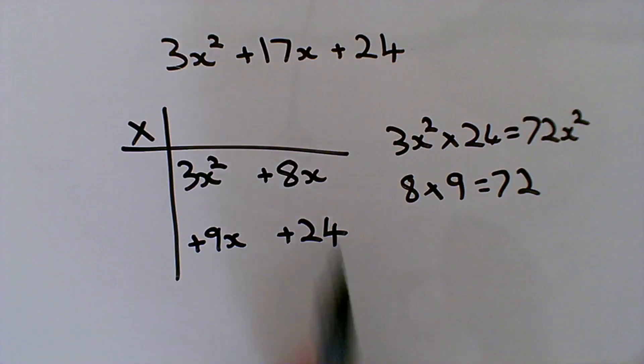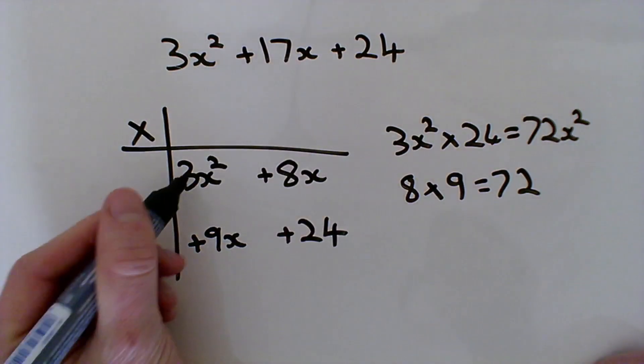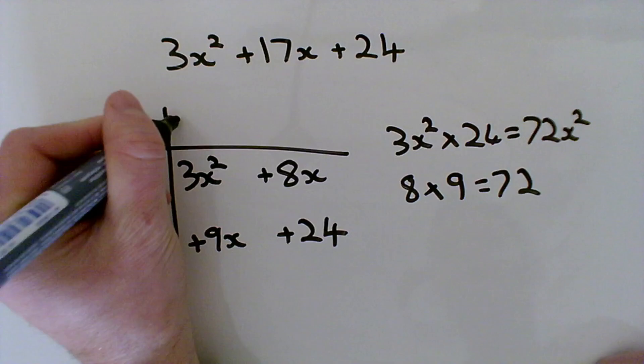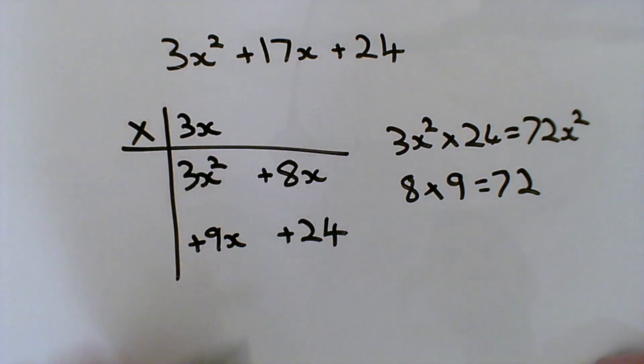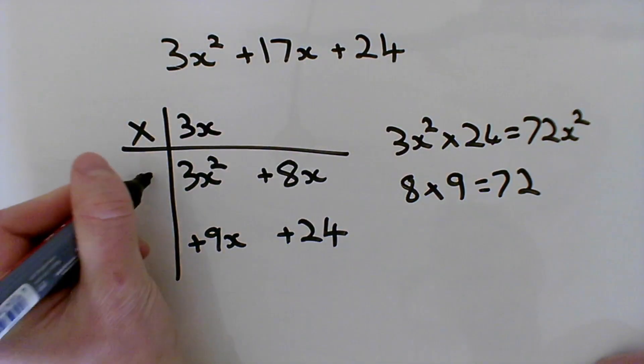So the only thing left to do then is to factorize out these sides. You can see we've got our 3 and 9 here, so let's take out our 3x, which means the single x must just go here on this side.